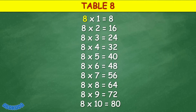Table 8: 8 times 1 equals 8, 8 times 2 equals 16, 8 times 3 equals 24, 8 times 4 equals 32, 8 times 5 equals 40, 8 times 6 equals 48, 8 times 7 equals 56, 8 times 8 equals 64, 8 times 9 equals 72, 8 times 10 equals 80.